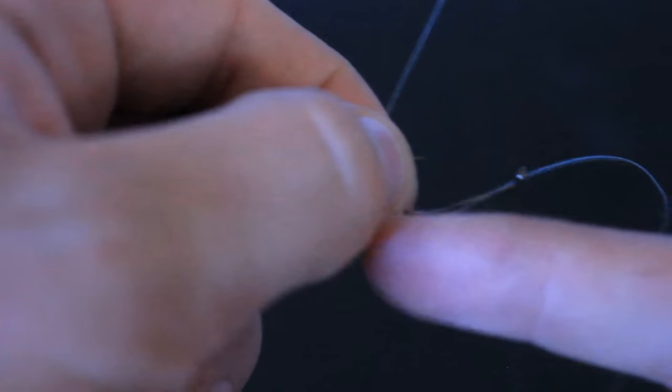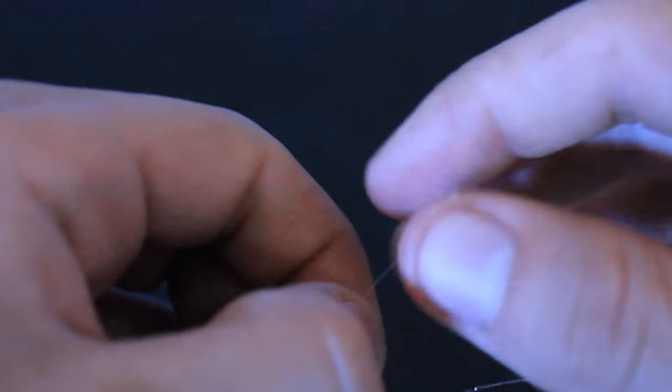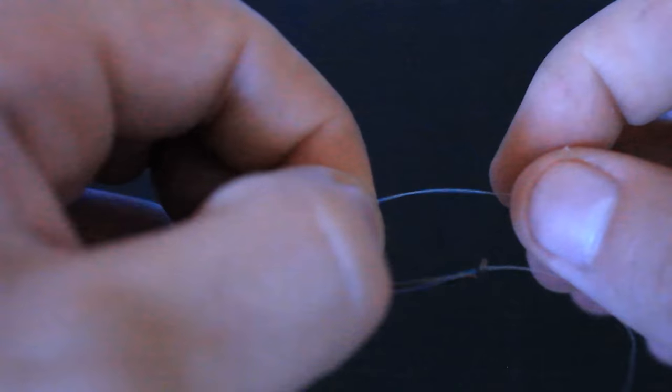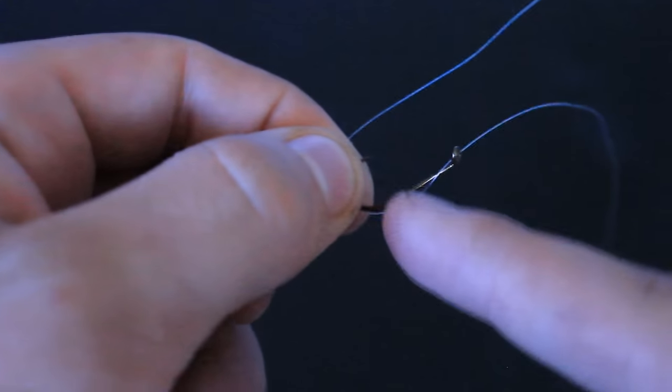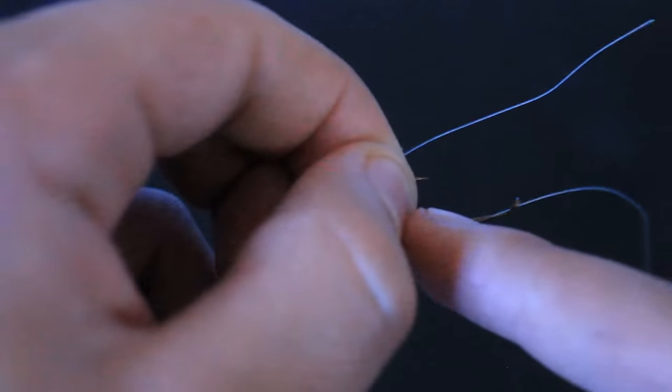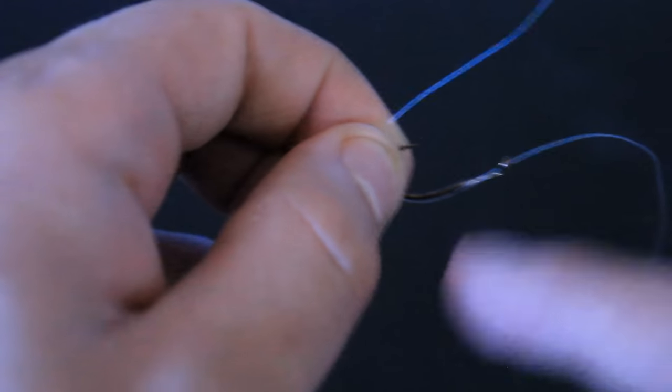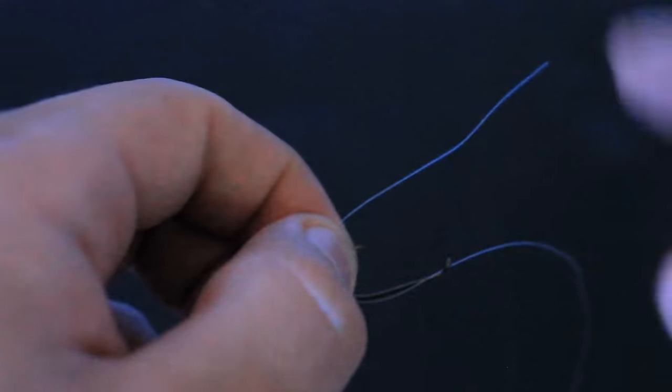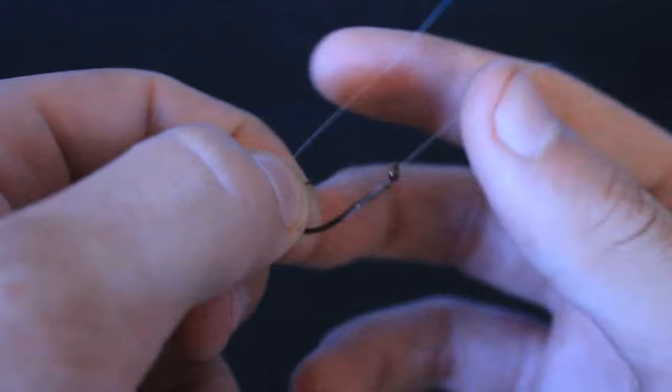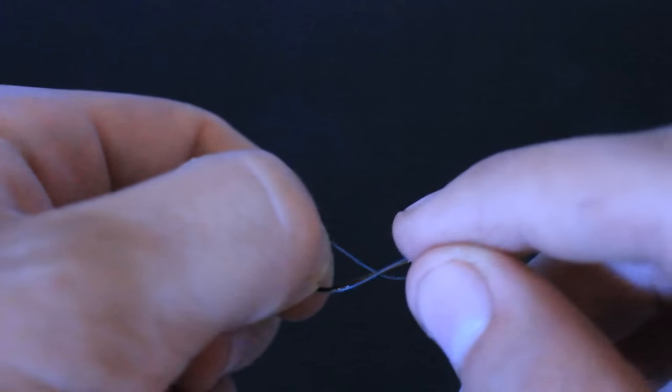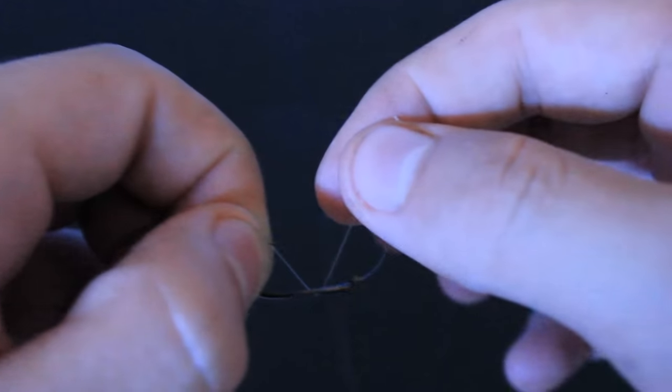You want to take this line that's sticking out, and this part gets a little tricky. Make sure to pinch this part where the hook curves with the line, like pinch it together like this. And you want to take this line and start wrapping around the base of the hook. You want to do this about seven times.